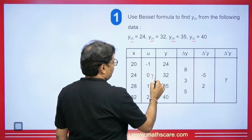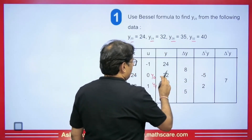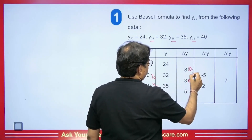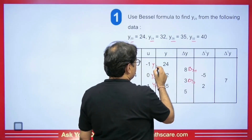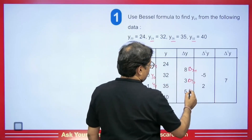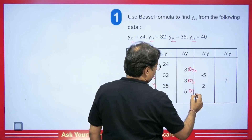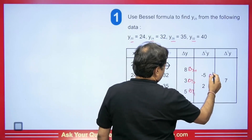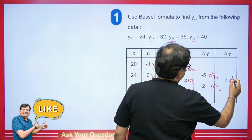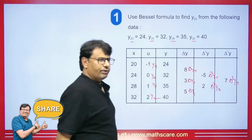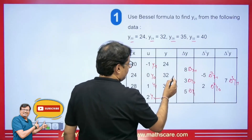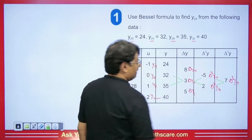The value 25 lies between 24 and 28, so Y0 corresponds to 24 and Y1 corresponds to 28. Then del Y0 and del Y minus 1 are identified. We also get Y minus 1 and Y2, with corresponding del Y1. Then del squared Y minus 1 and del squared Y0. And del cubed Y minus 1. When we use the Bessel formula, first we take these two terms, then this comes, then this — that is the formula we use.